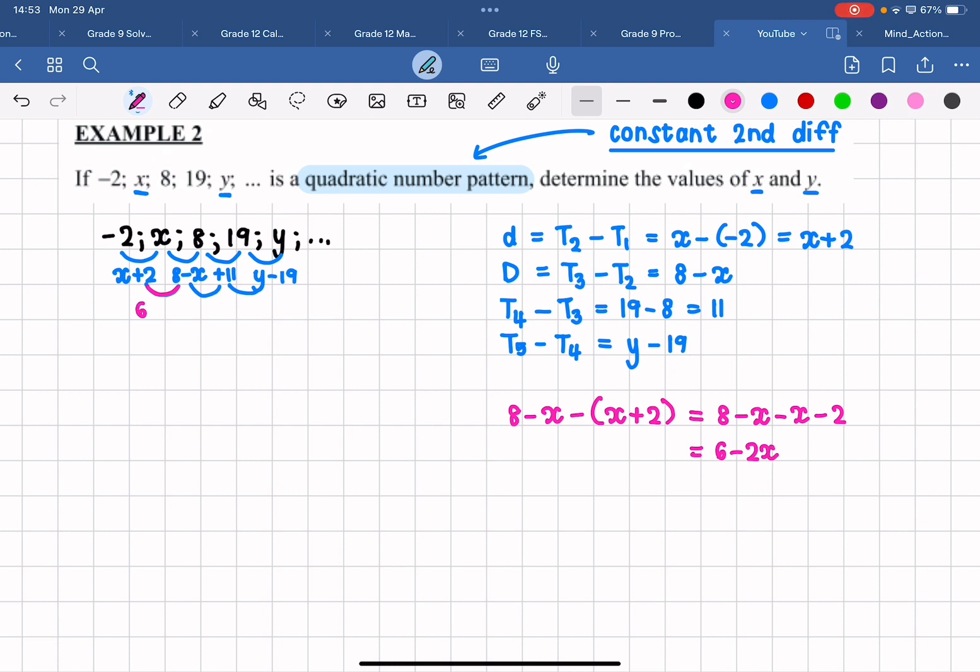So this is the second difference that I'm getting between my first first difference and my second first difference. Now we need to calculate the next second difference. So this green one over here.